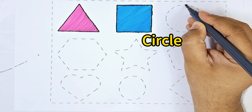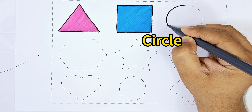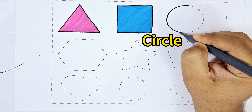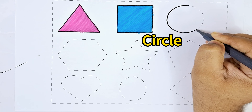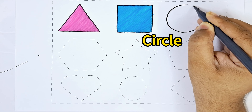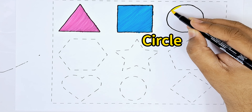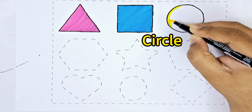Third one is a circle. It has no sides. And this is yellow color.